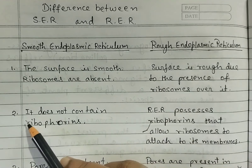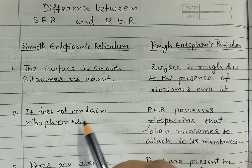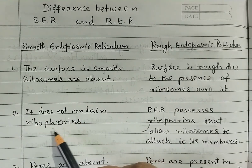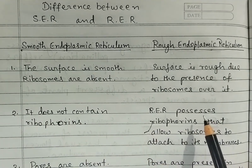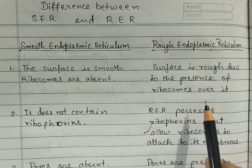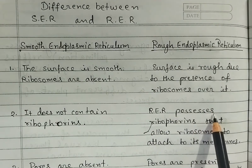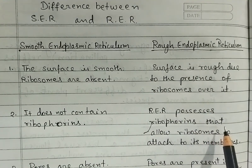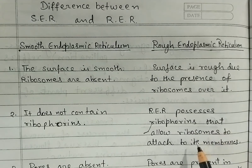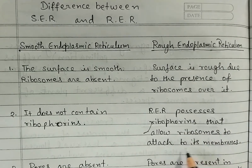Second difference — in smooth, it does not contain riboforins. Riboforins are glycoproteins. In rough, the rough endoplasmic reticulum possesses riboforins that allow ribosomes to attach to its membranes.